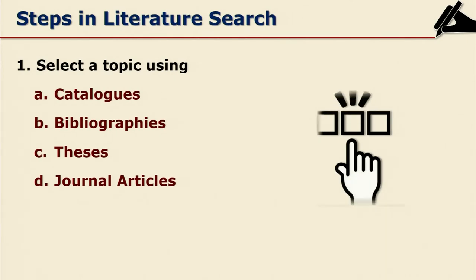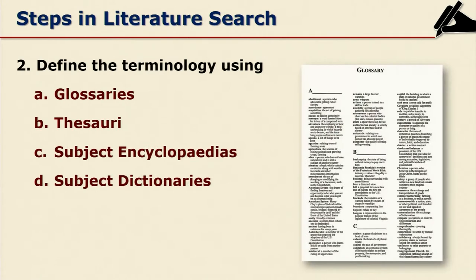Literature search is the first step in literature review. Here you have to select a topic with the help of catalogues, bibliographies, and theses. You locate the published material in the form of books, journal articles, theses, reviews, and also reviews of books and manuscripts. You then define the terminology with the use of glossaries, thesauri, subject encyclopedias, and subject dictionaries to clarify the concepts you are going to dwell upon in your research.